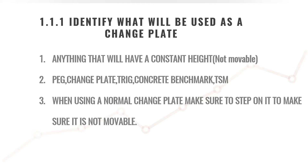Identifying what will be used as a change plate when using your dumper level. It can be a physical change plate which is movable and you step on it every time before you use it. It can be a peg — something which is more constant in height which you can refer to at a later stage — a trig, a concrete benchmark, or even a town survey mark if you want to do a high traverse.